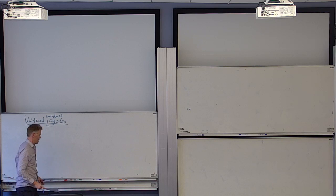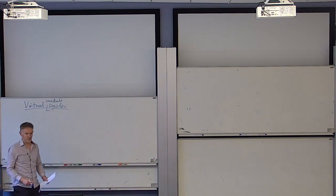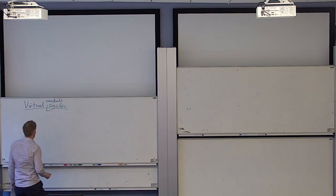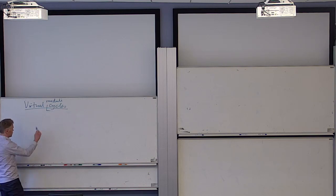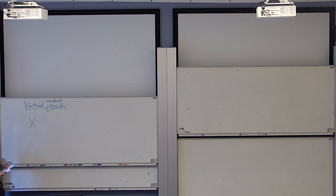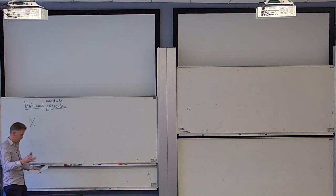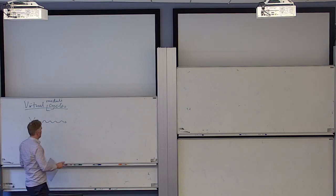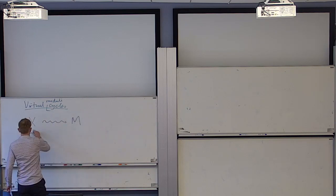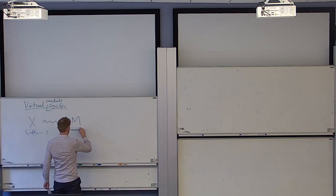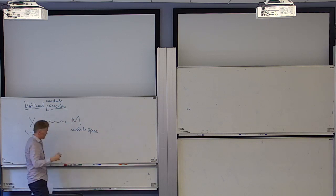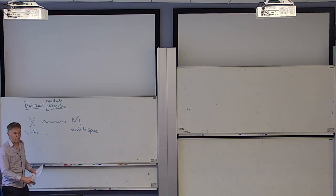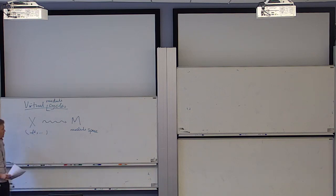Francis told us what a moduli space was, so I'm going to talk about how to get invariants from moduli spaces. Ever since Donaldson, what we do is we take X, which is some geometric object — a manifold, or a manifold with extra structure: maybe a symplectic manifold, a Calabi-Yau manifold, a complex manifold, or a four-manifold. And then in Donaldson-type theories, you associate to that a moduli space.